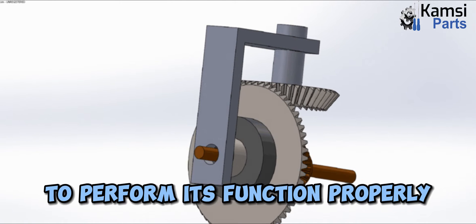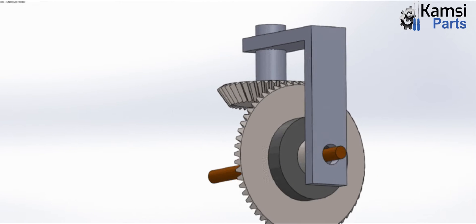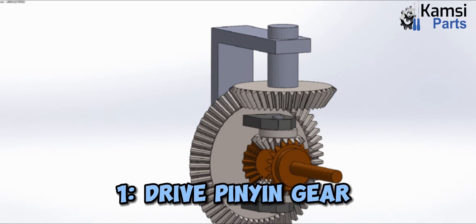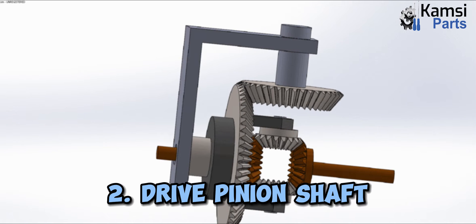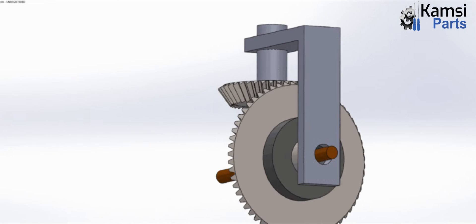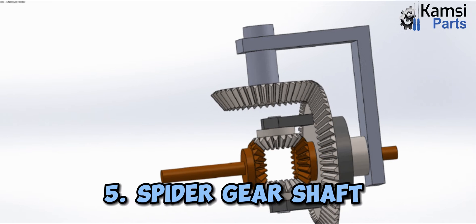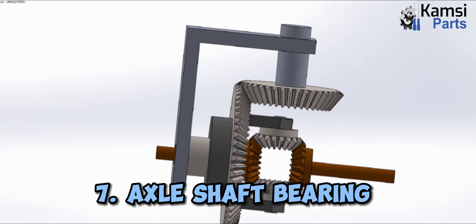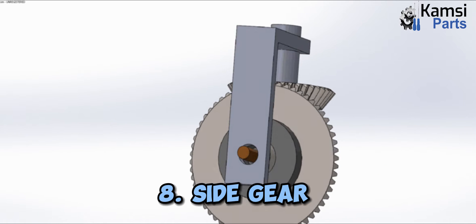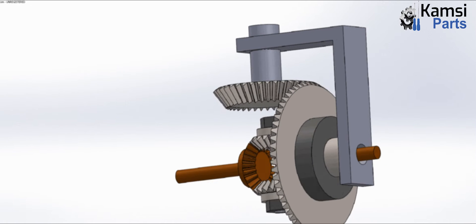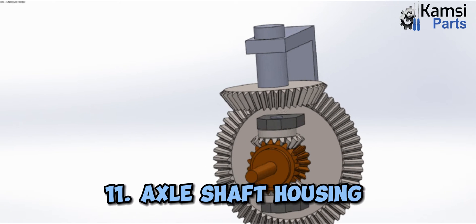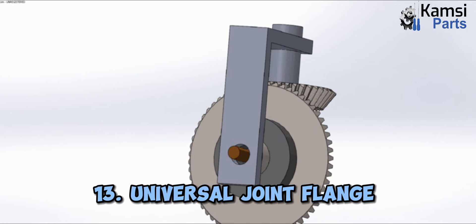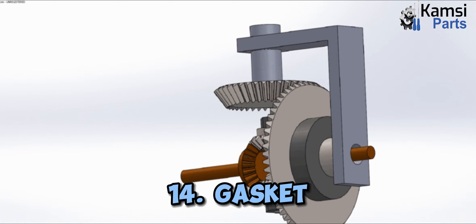Car axle components — to perform its function properly, the car axle has several interconnected components including: drive pinion gear, drive pinion shaft, ring gear, spider gear, spider gear shaft, differential carrier, axle shaft bearing, side gear, adjuster nut, bearing cap, axle shaft housing, axle shaft oil tube, universal joint flange, and gasket.